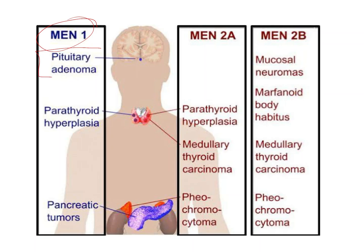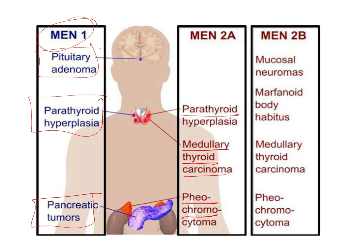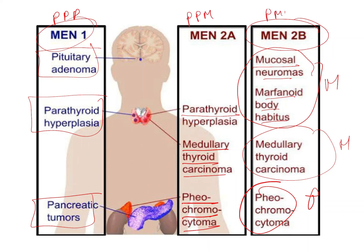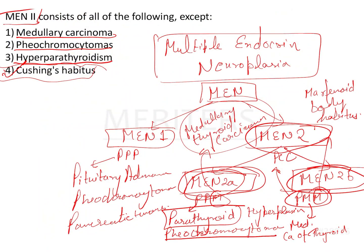To summarize: MEN1 includes pituitary adenoma, parathyroid hyperplasia, and pancreatic tumors. MEN2a includes parathyroid hyperplasia, medullary thyroid carcinoma, and pheochromocytoma. MEN2b includes mucosal neuromas, morphenoid body habitus, medullary thyroid carcinoma, and pheochromocytoma — remembered as PMM. Therefore, Cushing's habitus is the exception to the features of MEN2 syndrome.